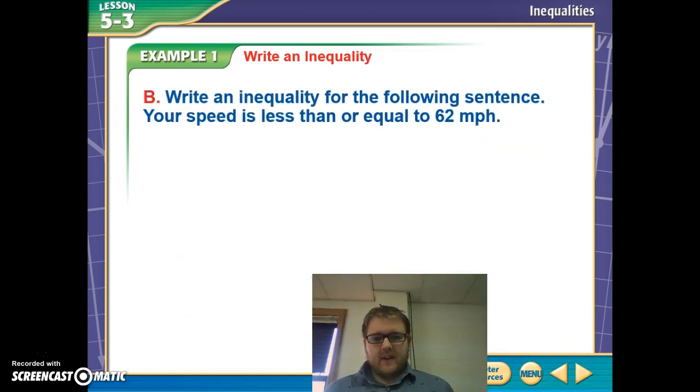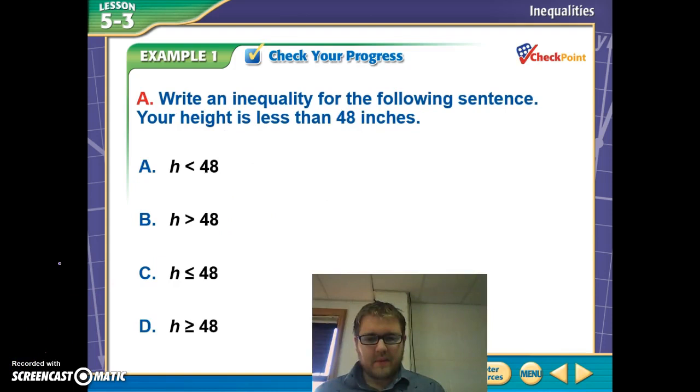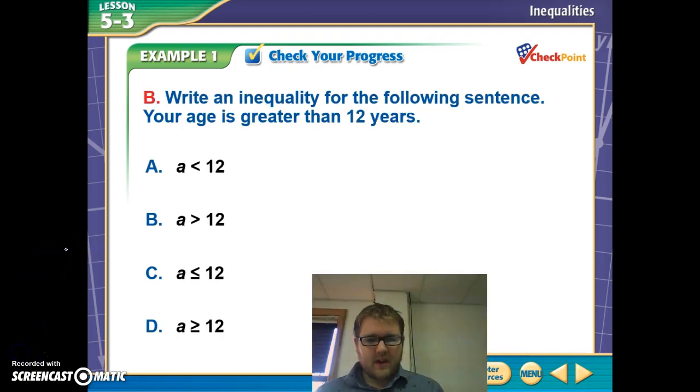For this one, now we're comparing. It says write an inequality for the following sentence: your speed is less than or equal to 62. So in this case, we're comparing your speed, which we can call s, and 62. And we're saying it's less than or equal to. So we would write that as follows: speed is less than or equal to 62. And that's how I would write that. So go ahead, pause the video if you need to, jot down an answer and figure out how you would write an inequality for this sentence. And I'll try this one.